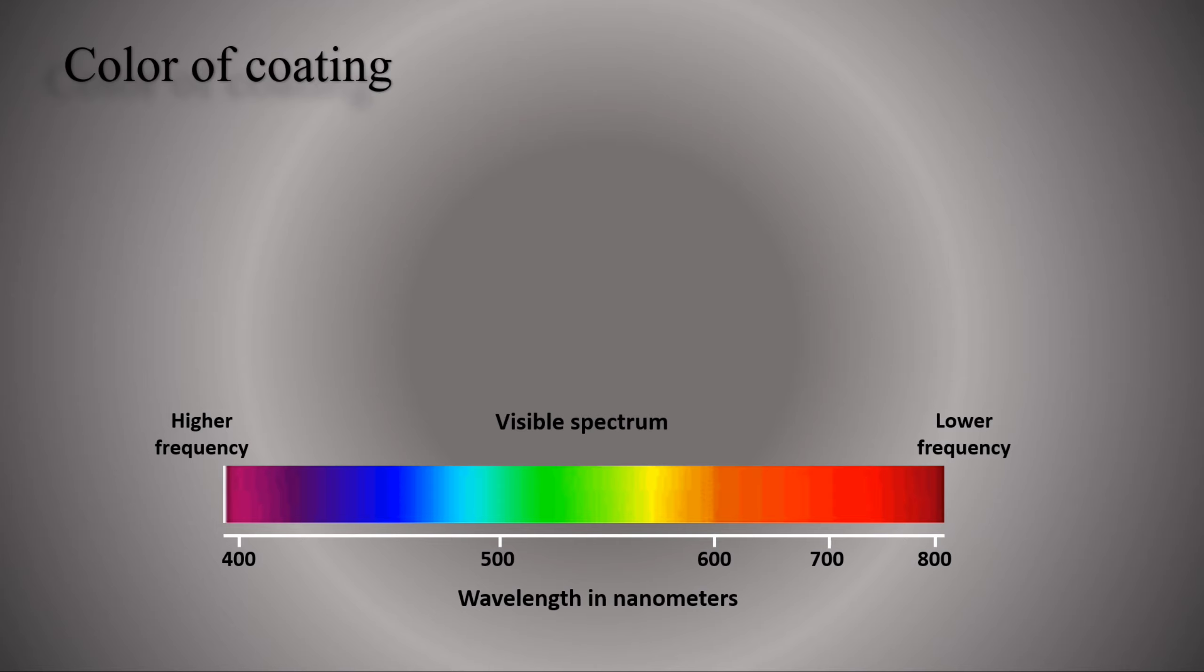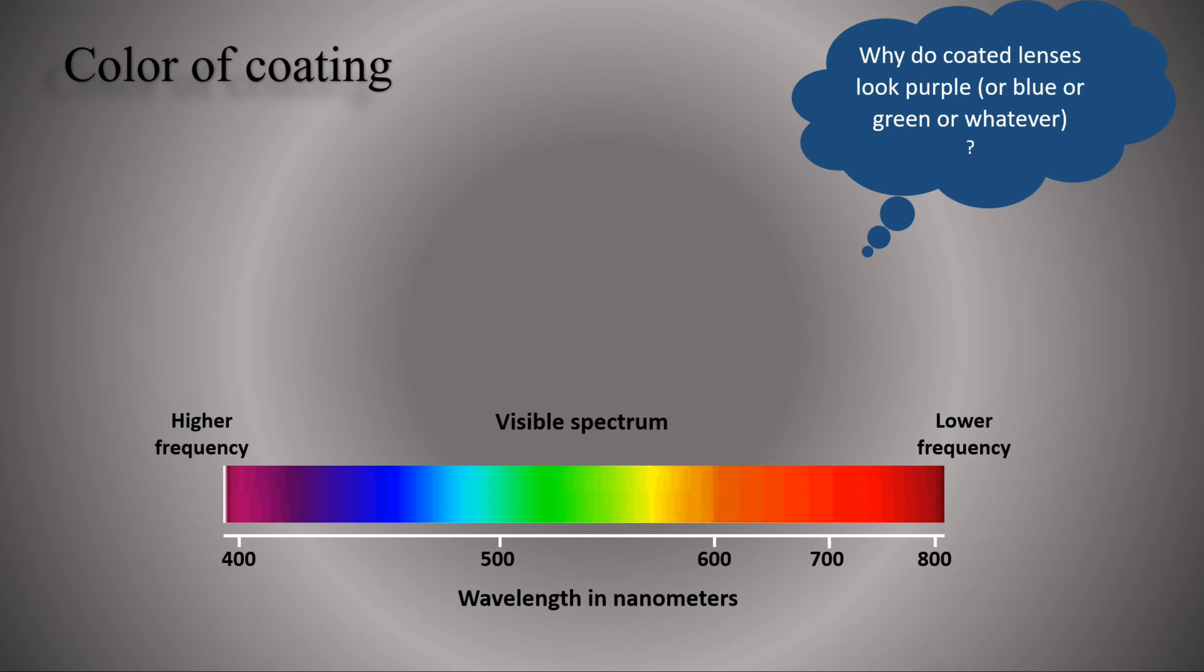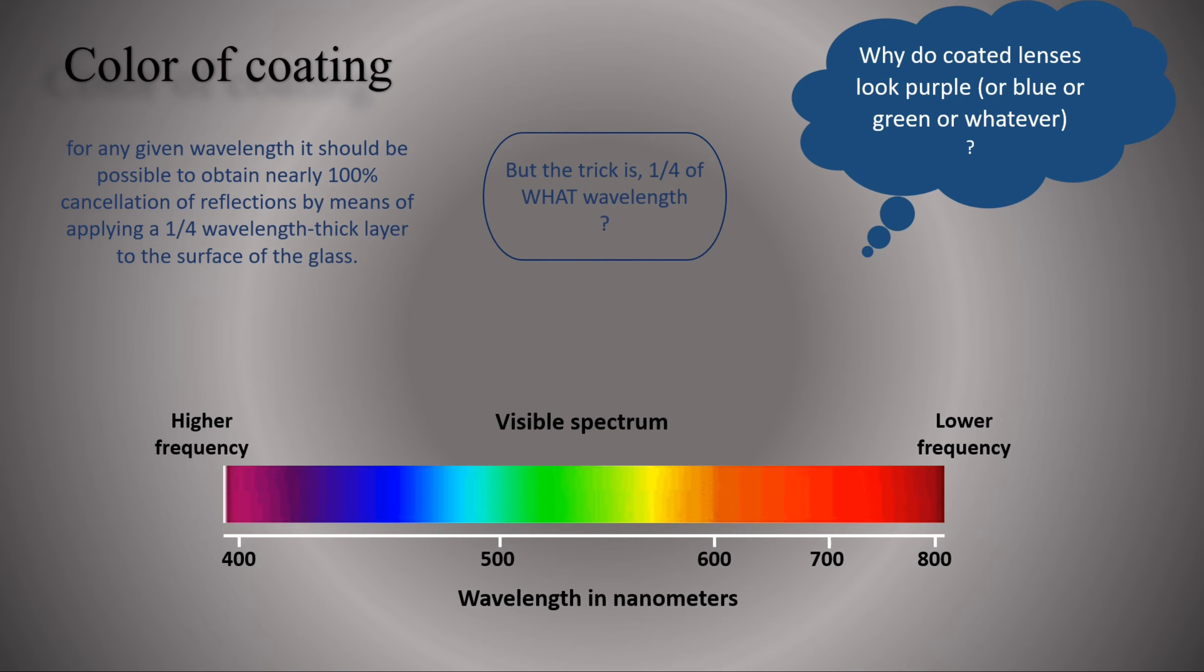Next question is, why do coated lenses look purple or blue or green or whatever? Here is the answer. For any given wavelength, it should be possible to obtain nearly 100% cancellation of reflections by applying a one-fourth wavelength thick layer to the surface of the glass. But the trick is one-fourth of what wavelength. Light isn't all one wavelength.